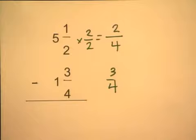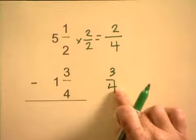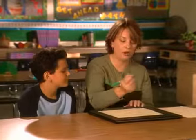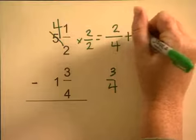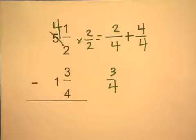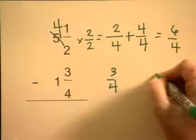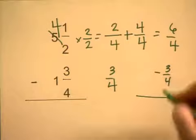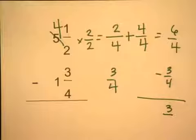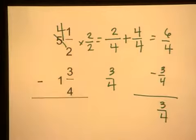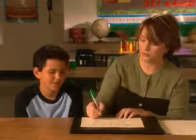Can we subtract 2 minus 3? No. We can't subtract the smaller one minus the bigger one. So what do we do in subtraction when we have a smaller number on top? We borrow. Let's borrow from our 5, and we remember that 4 fourths is equal to 1. So now we have 6 fourths minus 3 fourths. 6 minus 3 is 3 fourths. Can't forget about our whole numbers. We have 4 minus 1, which gives us 3 and 3 fourths.